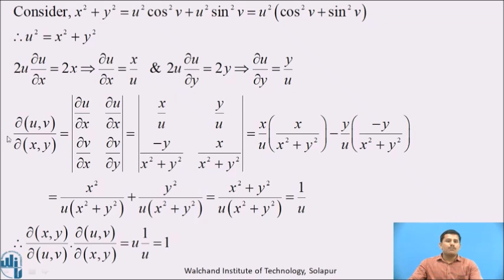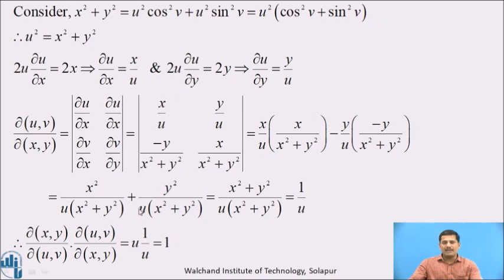We now have all four partial derivatives. By definition, the Jacobian of uv with respect to xy is the 2×2 determinant. Substituting, we get: (x/u)·(x/(x²+y²)) − (y/u)·(−y/(x²+y²)) = x²/(u·(x²+y²)) + y²/(u·(x²+y²)) = (x²+y²)/(u·(x²+y²)) = 1/u. Therefore the Jacobian of uv with respect to xy equals 1/u.